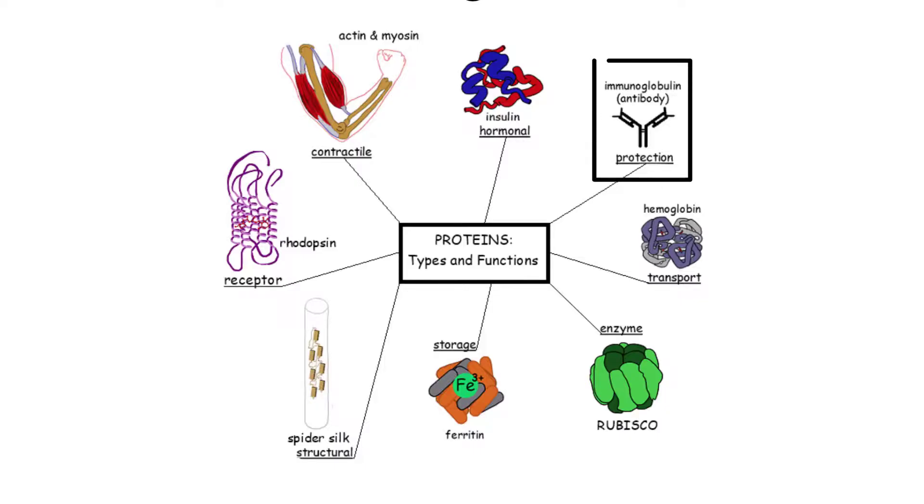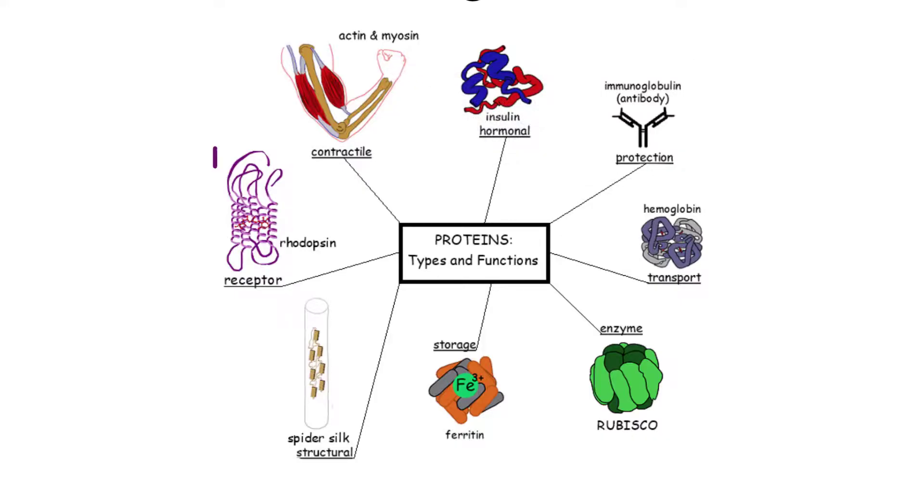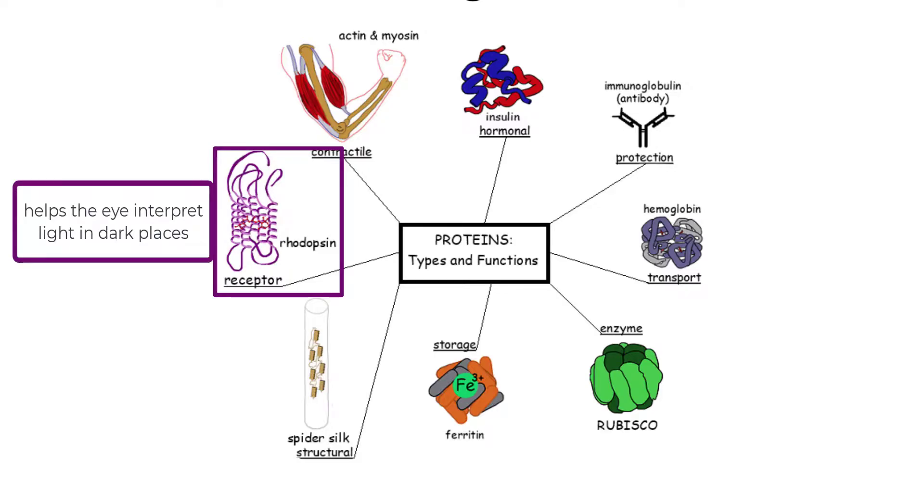Next up we have immunoglobulins. These proteins are specially designed antibodies that can target specific antigens found on pathogens that enter our body. This helps our immune system find and destroy invaders like viruses. Next is rhodopsin. This is a specialized protein found within the rod cells that sit in the tissue that makes up the back of our eye, called the retina. This protein helps with detecting light and allows you to see under different conditions, especially when light sources are faint, when it's very dark outside.